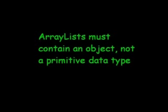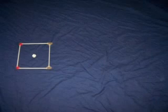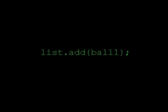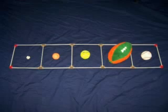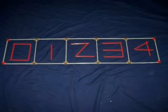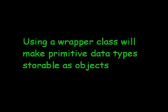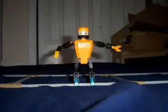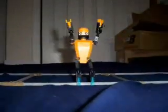ArrayList must contain an object, not a primitive data type. That is why the ArrayList can add an object such as a ball. Numbers such as these are primitive data types. You can use a wrapper class though — using a wrapper class will make primitive data types storable as objects. That's all we have for today, but be sure to take the time and explore Arrays and ArrayLists for yourself, because you'll find there are many more differences than just these basic ones.